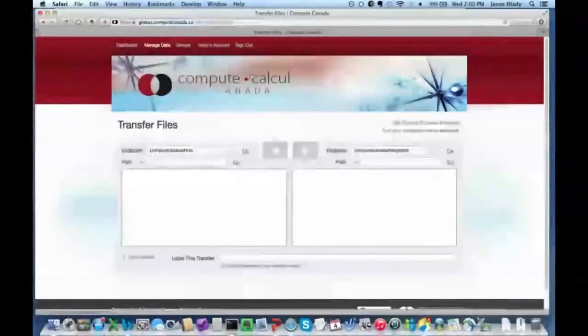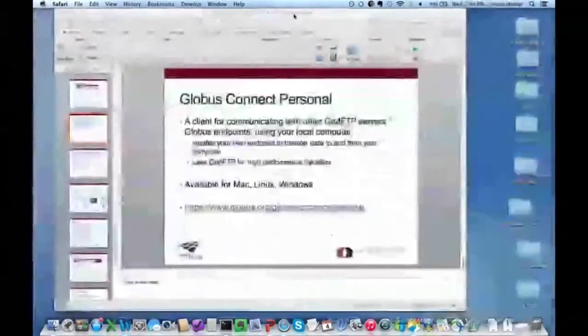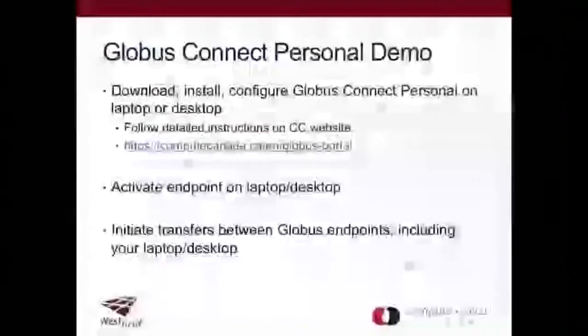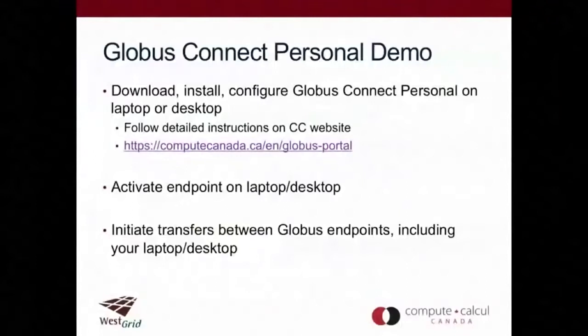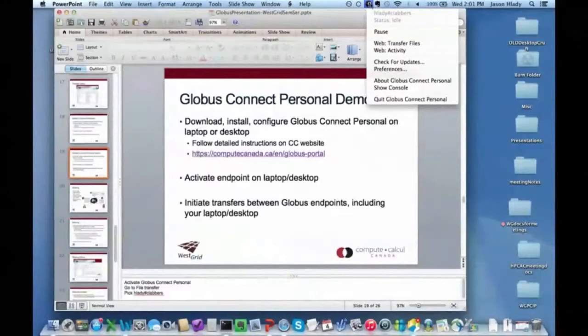In the start transfer window there's a link that says get Globus Connect Personal. You follow the steps there to install and configure it — there are detailed instructions on the Compute Canada website. I've already installed it on my laptop. You download, install, and configure it, then activate the endpoint. I've got the little Globus G icon showing that my laptop is running Globus Connect Personal, named hladi#clabbers.